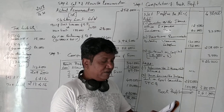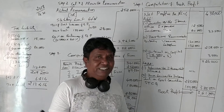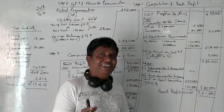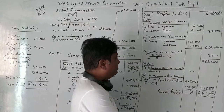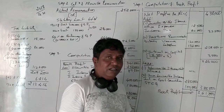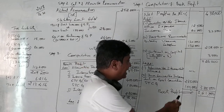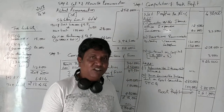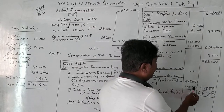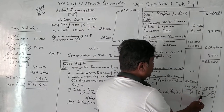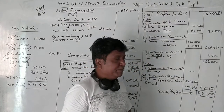Next, interest on government securities is income from other sources and is taxable under that head, so it is an inadmissible income. Short-term capital gain of Rs. 1,00,000 is taxable under the head capital gains, not here. Deducting these two items, we get a book profit of Rs. 3,41,000.